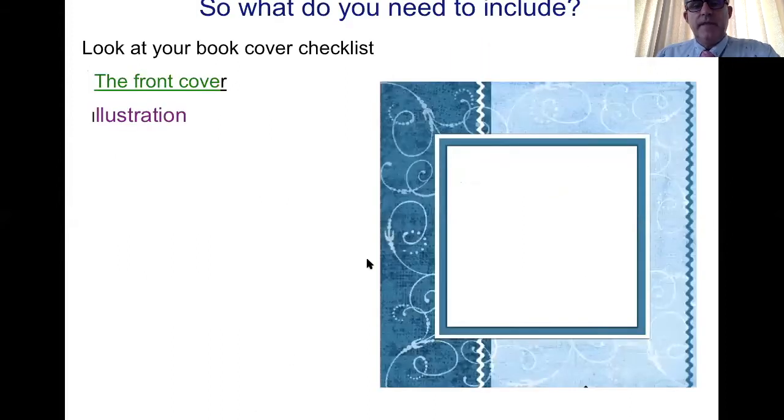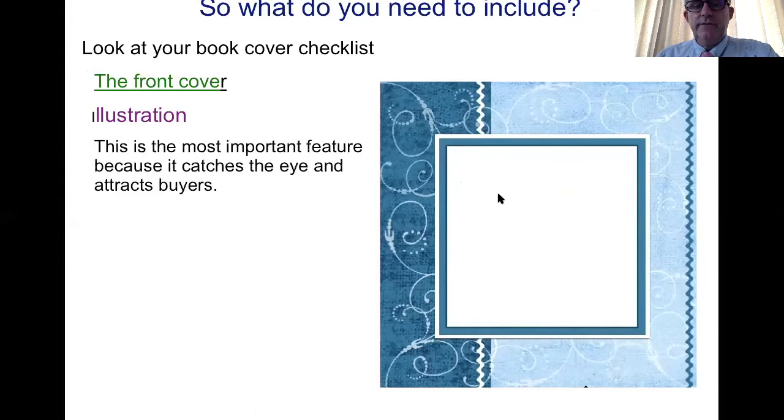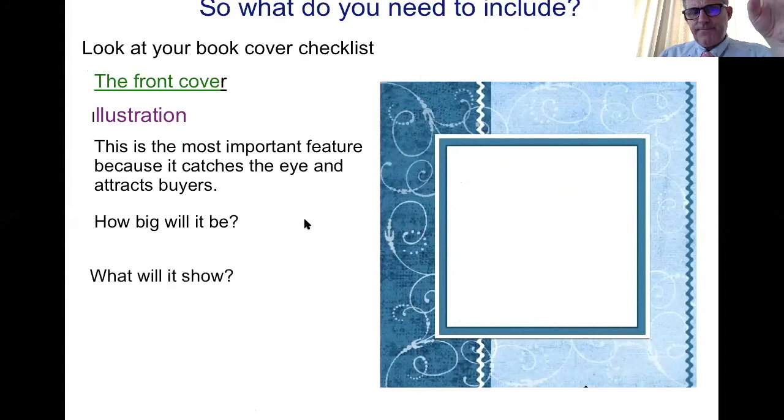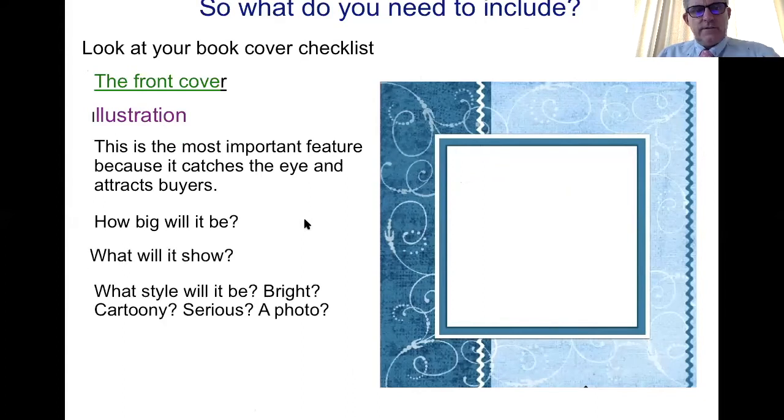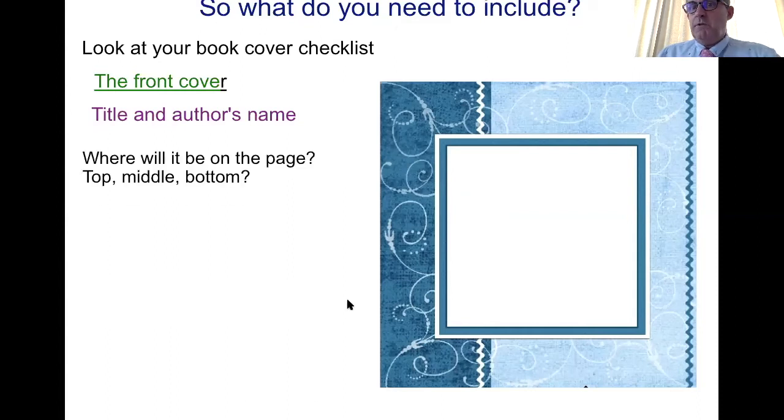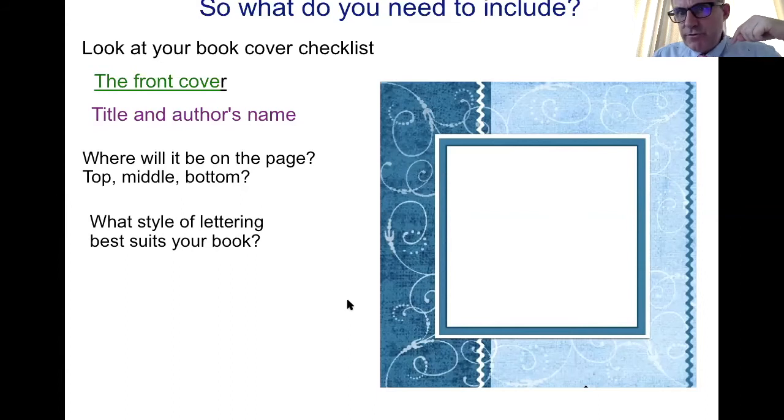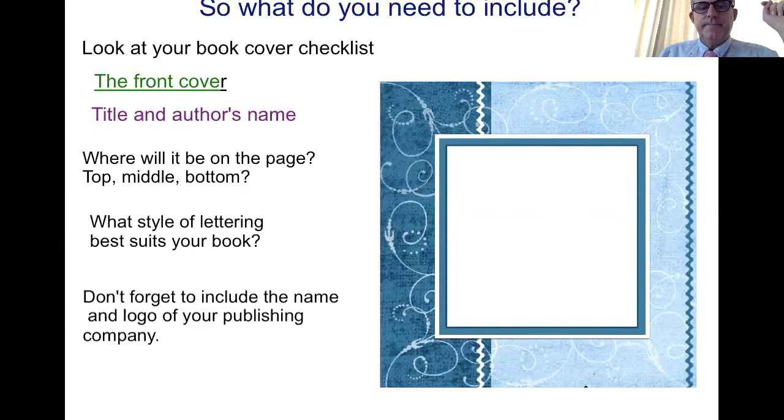So, front cover. You're going to make it look nice. That's called an illustration. You're going to make it look nice. Don't forget, if it doesn't look nice, people won't buy it. Don't worry about how big it is. We'll start with the one that I've got. What's it going to show? Is it going to be funny, serious, a photograph, a drawing? Don't forget to put your title of the book and the name of the author on the book. Top, middle, bottom, up. So, you've got to have a look at the books in your room and have a look. All right?